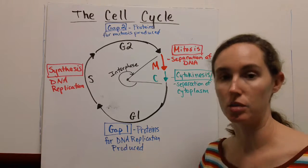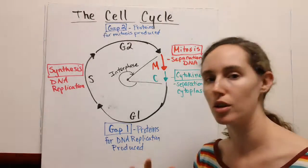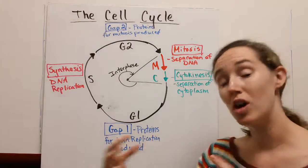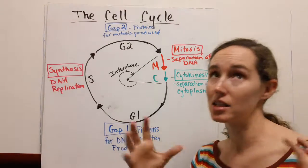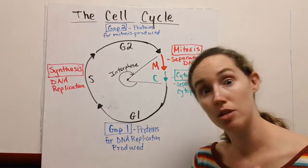We're going to start here with G1. Gap one is the beginning of the cell cycle process when the cell is just doing its cellular thing and growing, taking the temperature of its environment to figure out if it's time to divide or not.